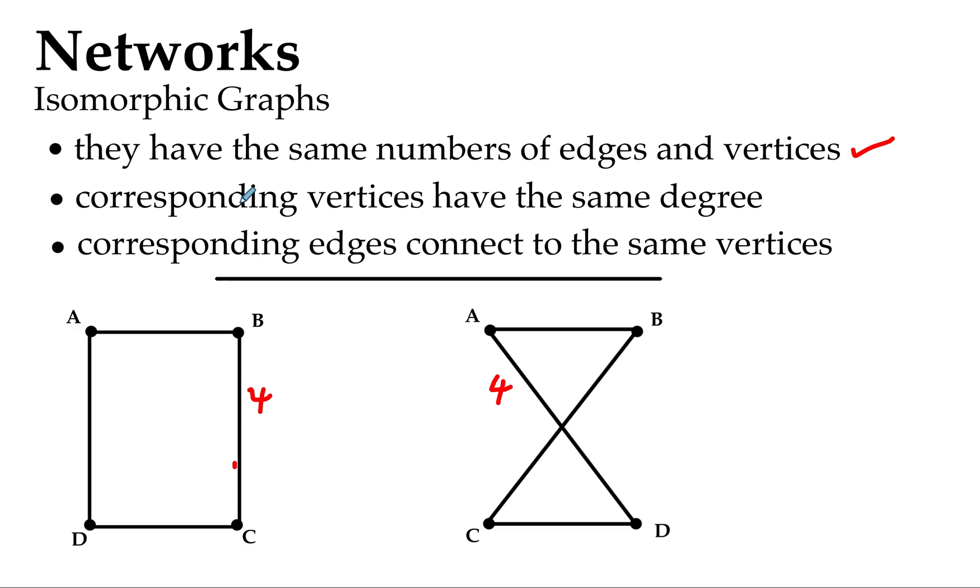Now we also need for them to be isomorphic graphs, they need corresponding vertices having the same degree. The vertex here at A has a degree of two. The vertex here which is corresponding to it has a degree of two. It has two edges connecting with it.